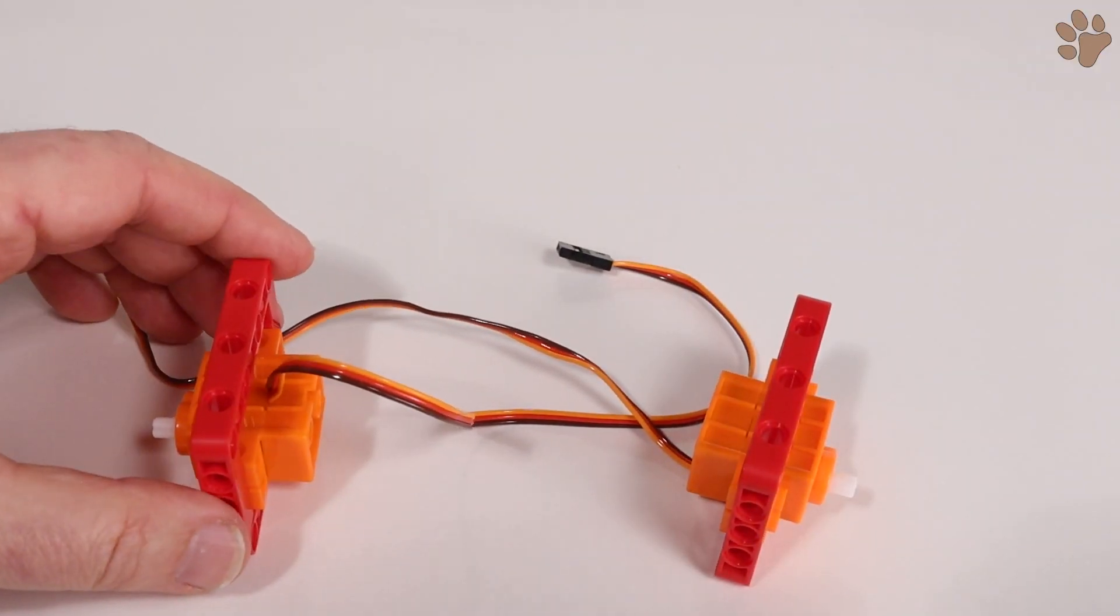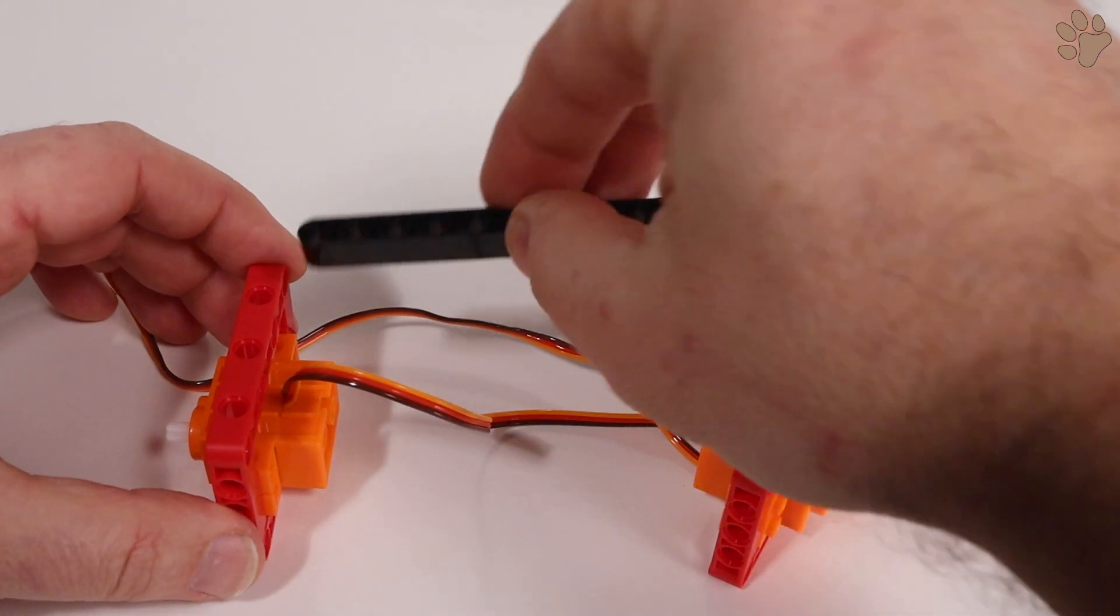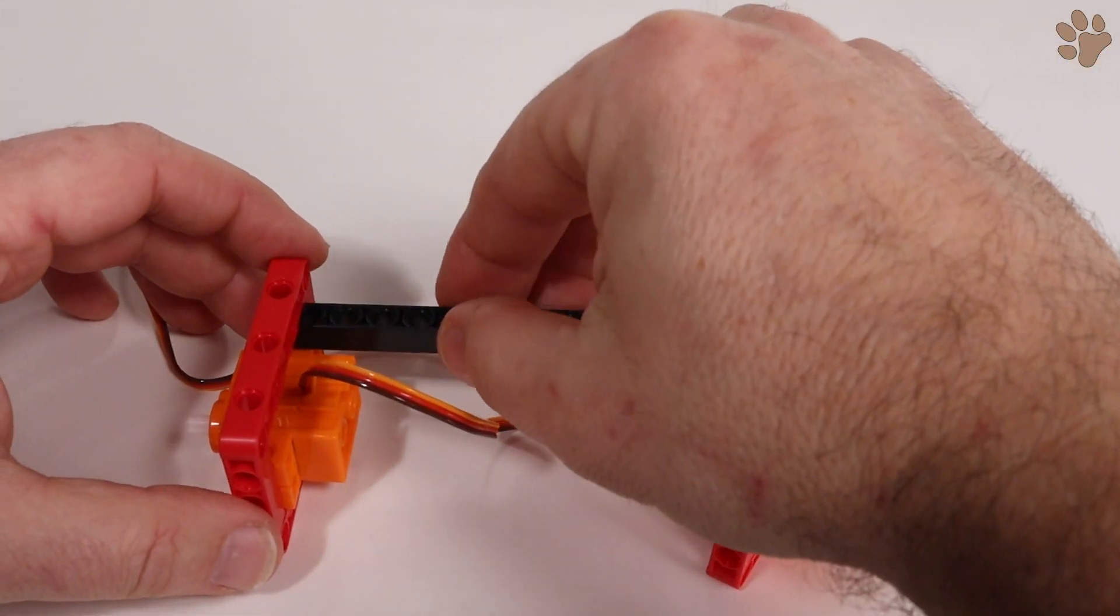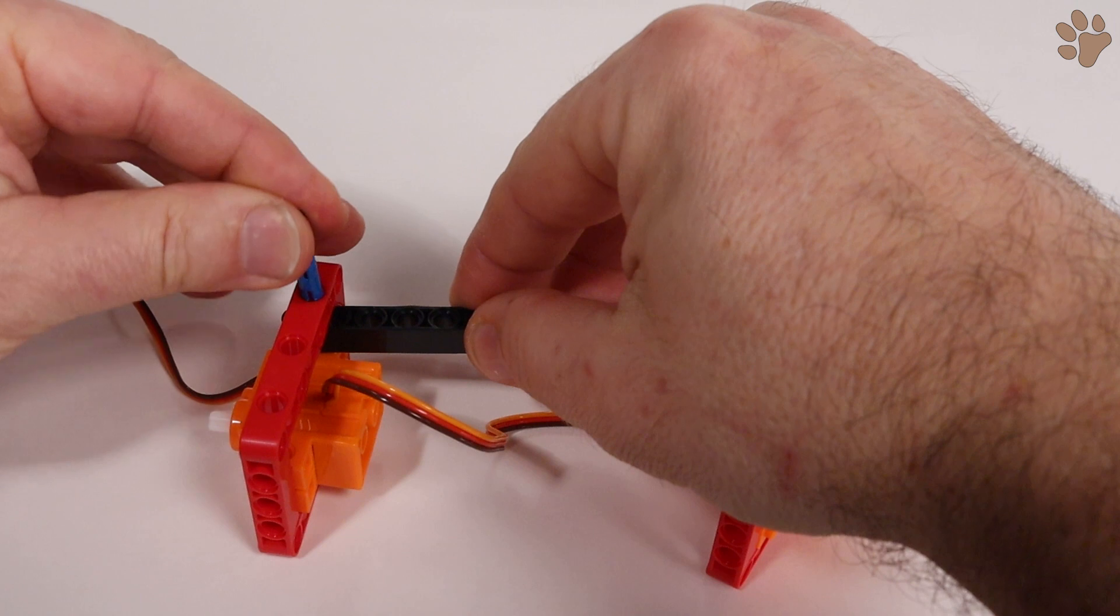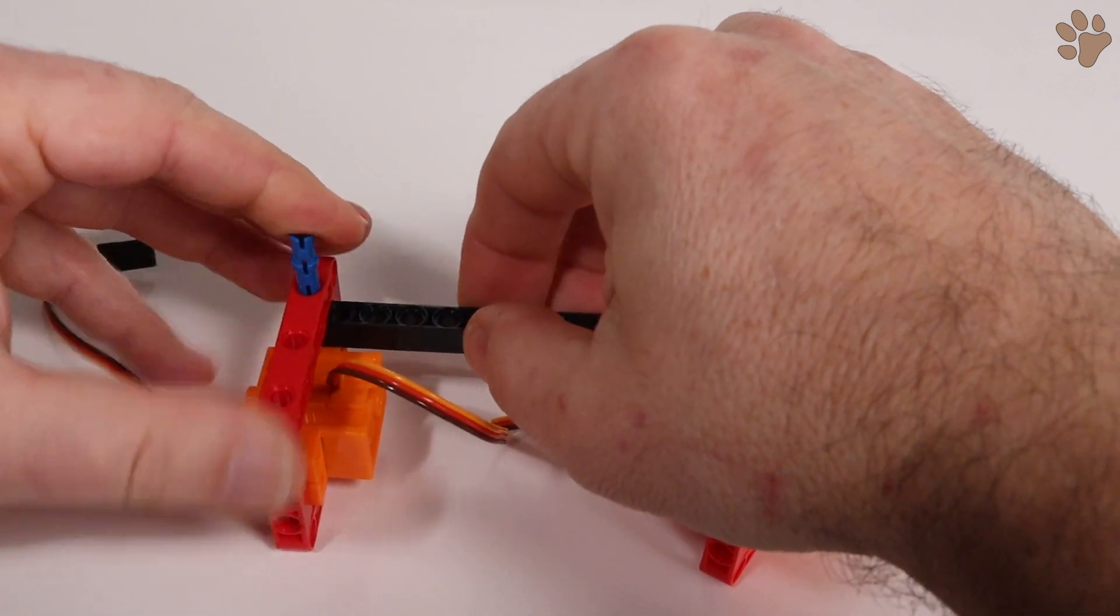Next, we'll add some cross beams. Slide the long black beams in place inside the frame on top of the servo. Use one of the long blue pins to secure the beam in place.